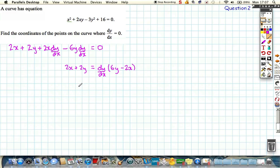Now we can get an expression for dy/dx, just by dividing by the bracket, so we get 2x plus 2y on top, and we get 6y minus 2x on the bottom, which we can cancel a factor of 2 from all parts, gives us x plus y all divided by 3y minus x. So this is expression for our gradient.